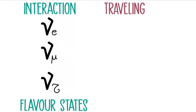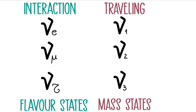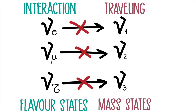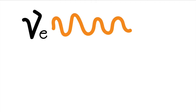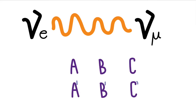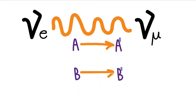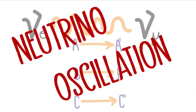While traveling, there are three different kinds of neutrinos characterized by their masses. The relation between these states is not one-to-one — to the contrary, each flavor state is a linear combination of the mass states. This weirdness allows neutrinos to change their flavor identity, so a neutrino that was produced as an electron neutrino can travel a certain distance and be detected as a muon neutrino. This means A went to A prime, B to B prime, and C to C prime. We call this neutrino oscillation.